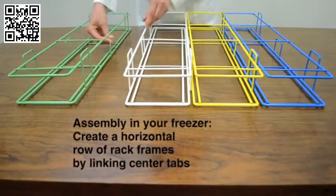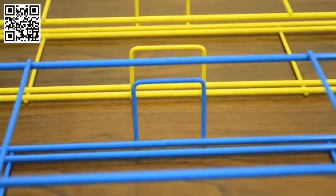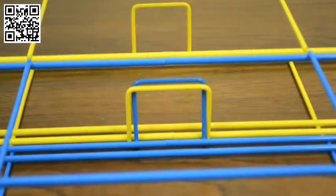To create a horizontal row of racks, position rack frames side by side, and lift the wide center tab of one over the narrow center tab of the other to lock together.